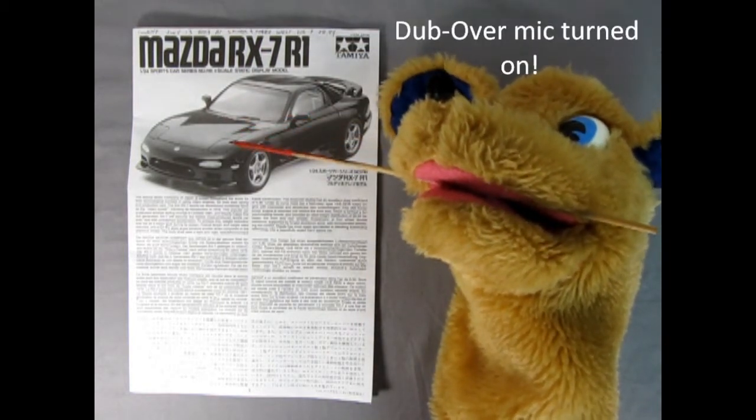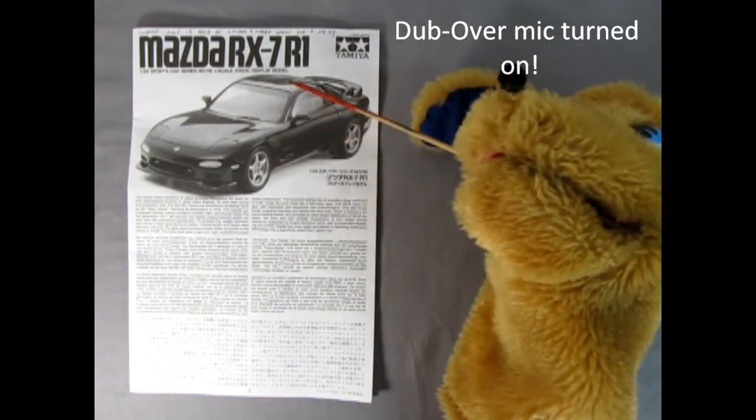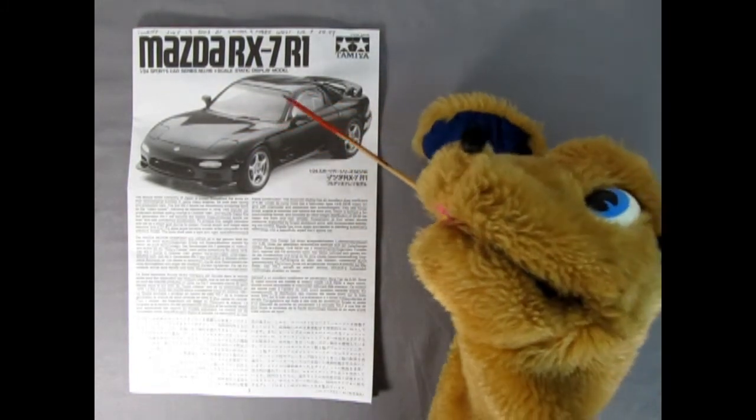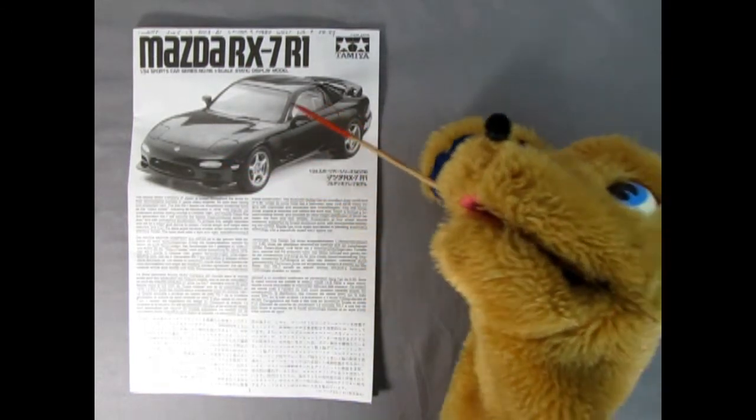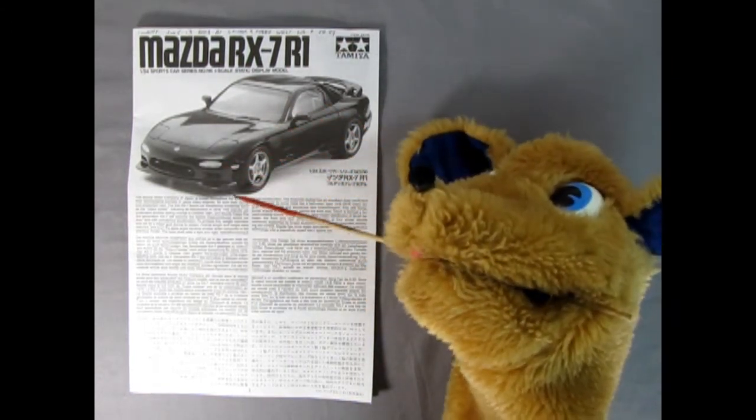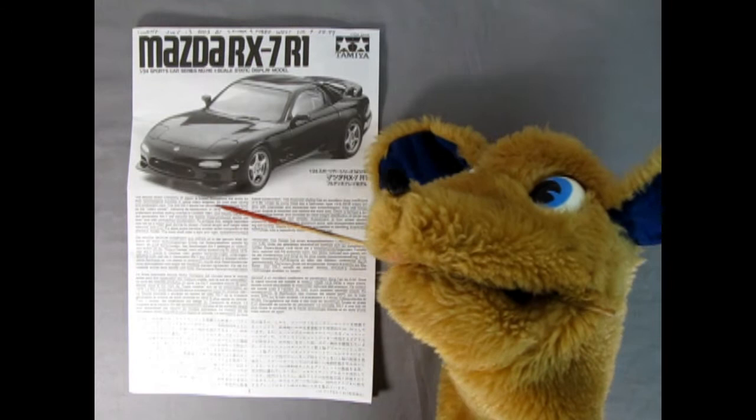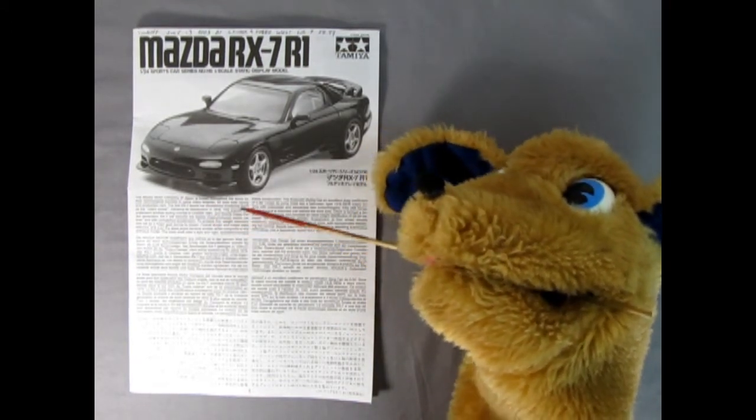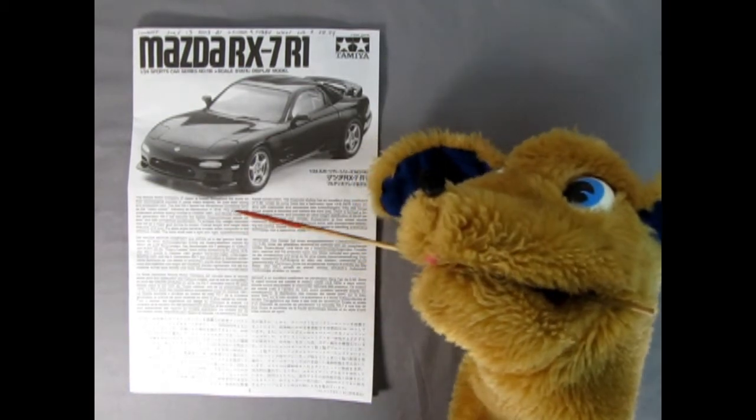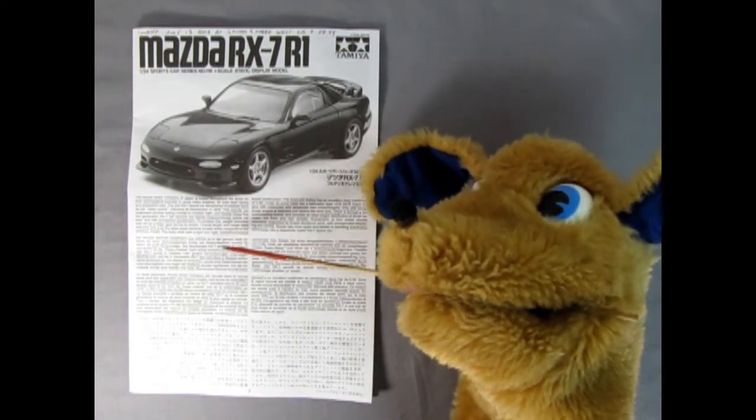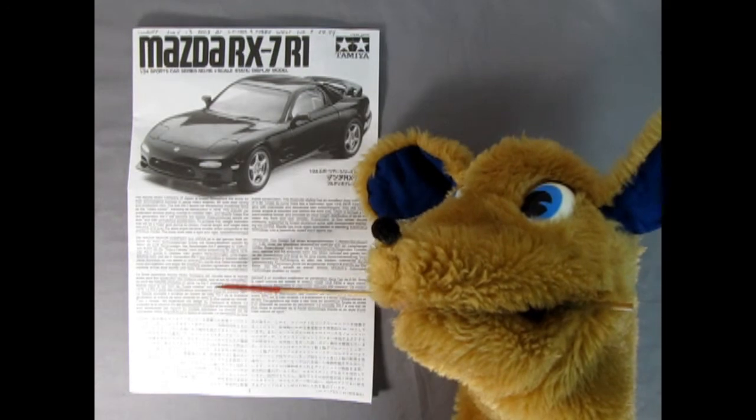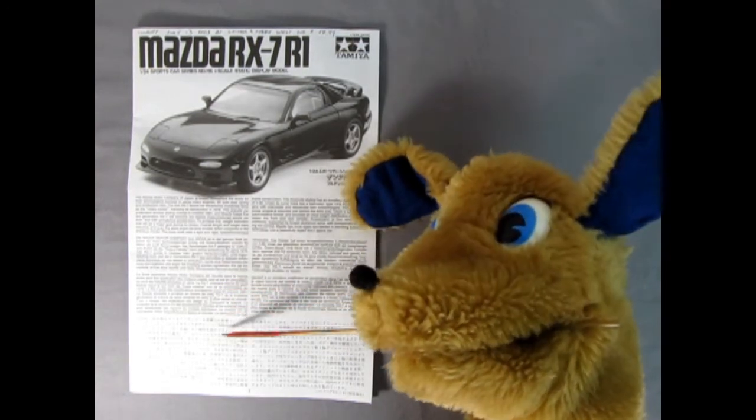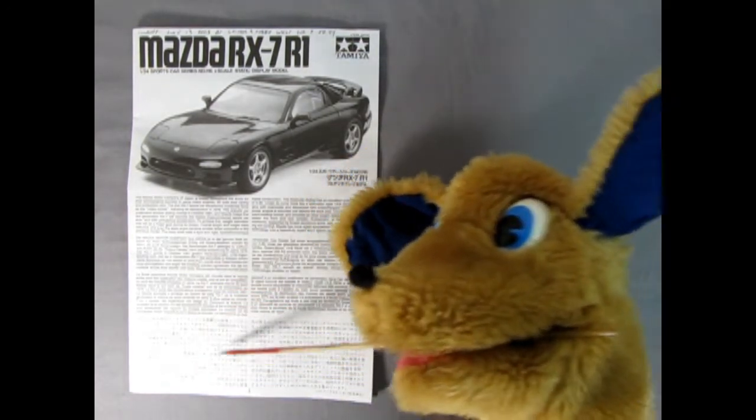Here we have the Mazda RX-7 R1. As you can see you've got the wonderful photo of the built-up model down here. Then you've got a wonderful write-up about the Mazda Motor Company and all their history, and the history of this car. It says it came out in October 1991. And then here we got it in German, in French, and then in Japanese down here.